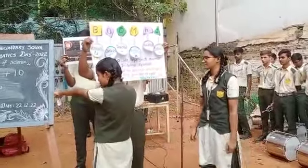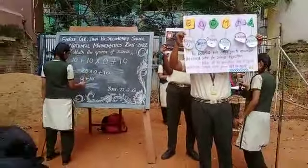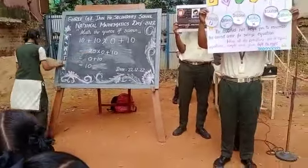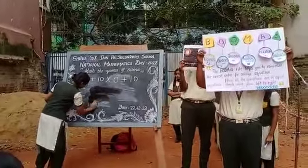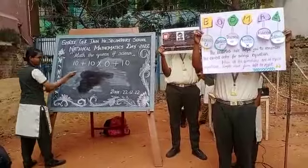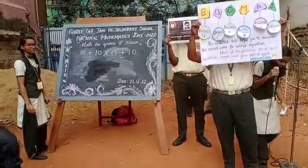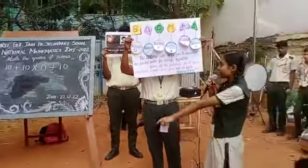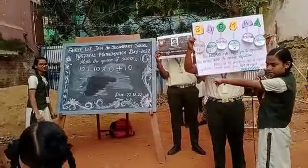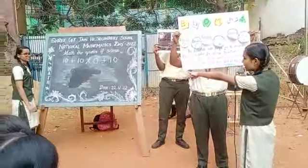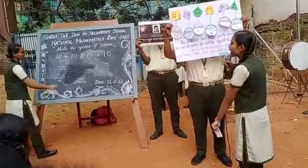Let us solve this equation again with the proper rules. First, is there any bracket? No. Is there any Orders? No — it means powers: square, cube, power. No. Is there any division? No. Multiplication? Yes — then we have to do multiplication first.